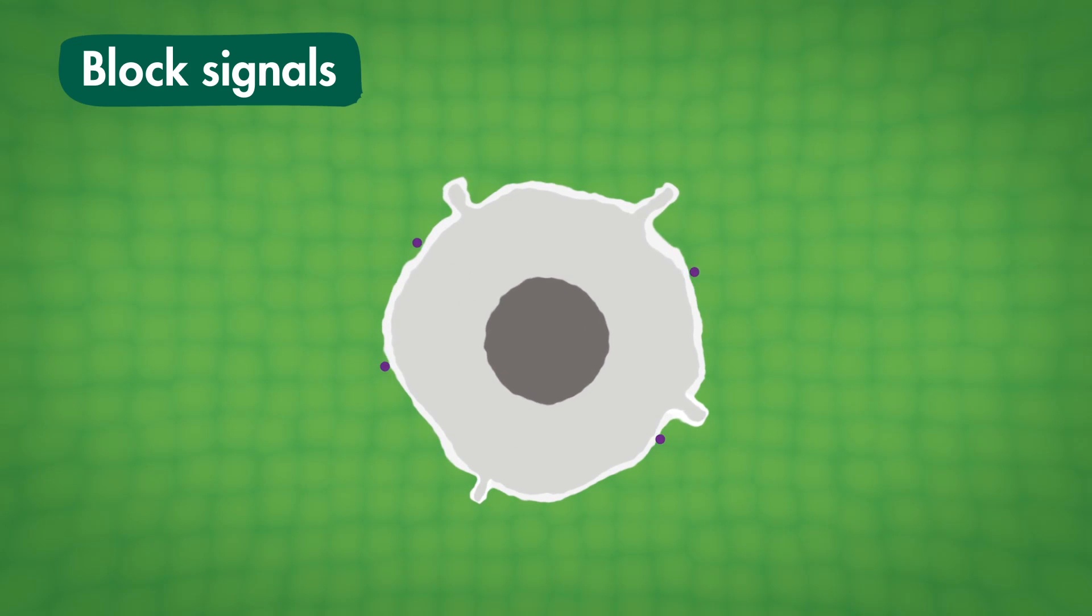Targeted therapies can block signals either inside or outside the cancer cell. This stops the nucleus telling the cancer cell to divide and make new cells.